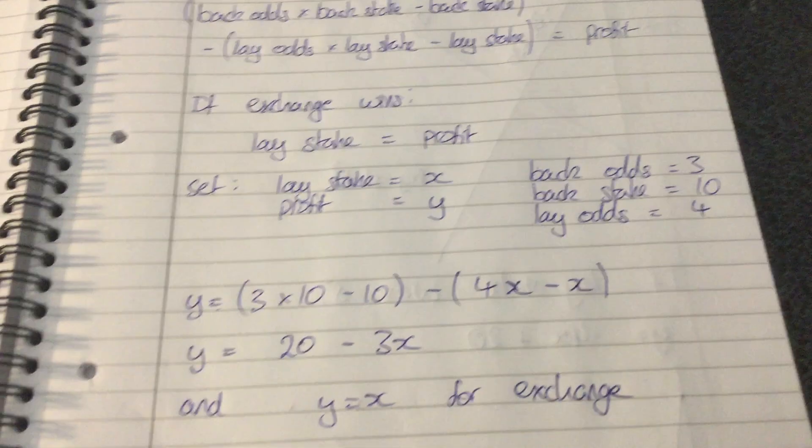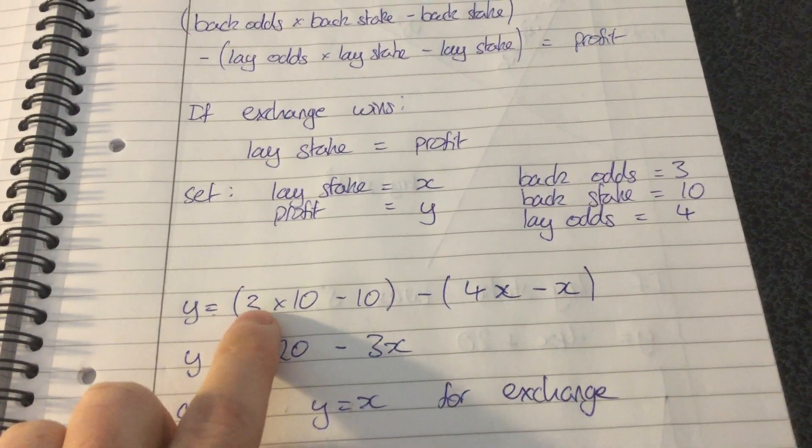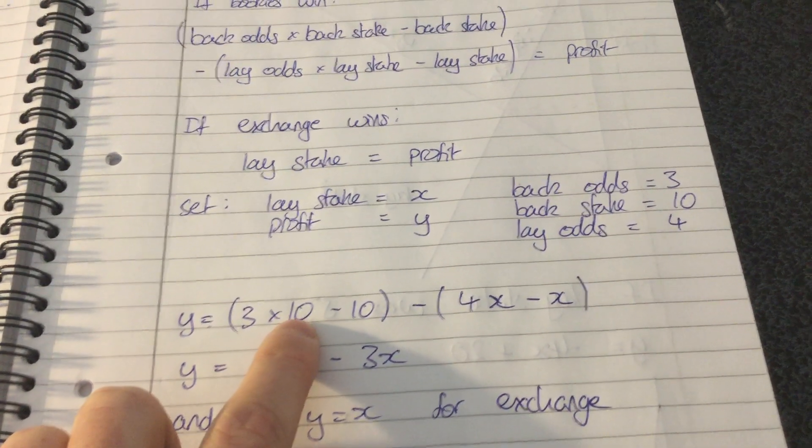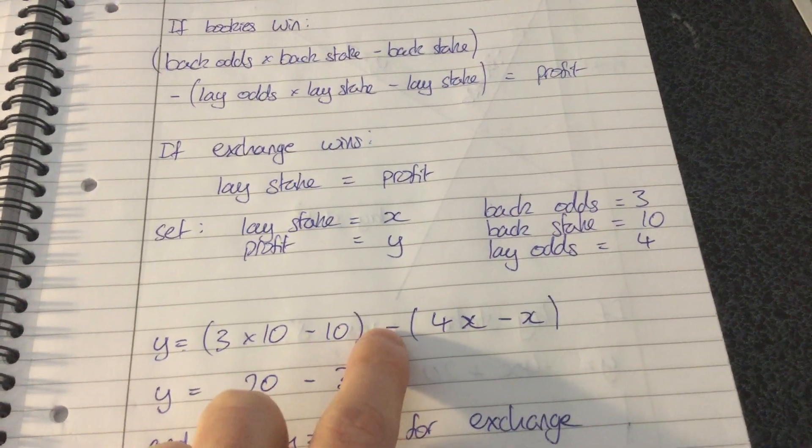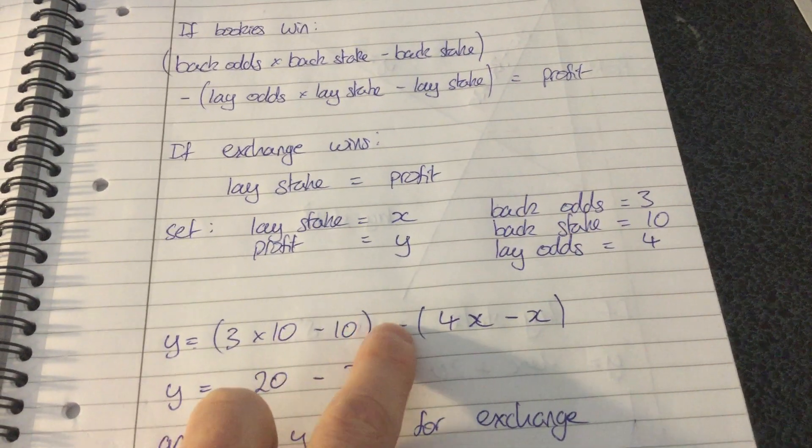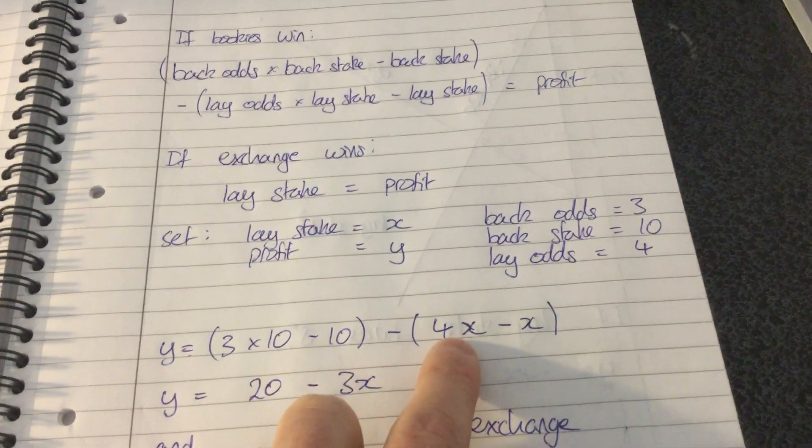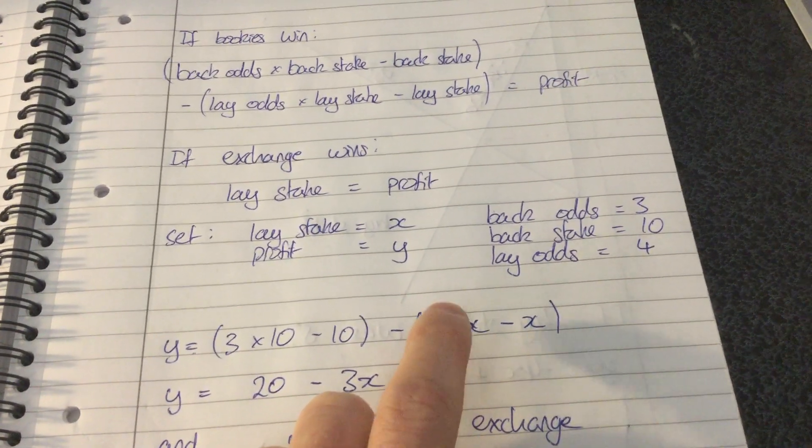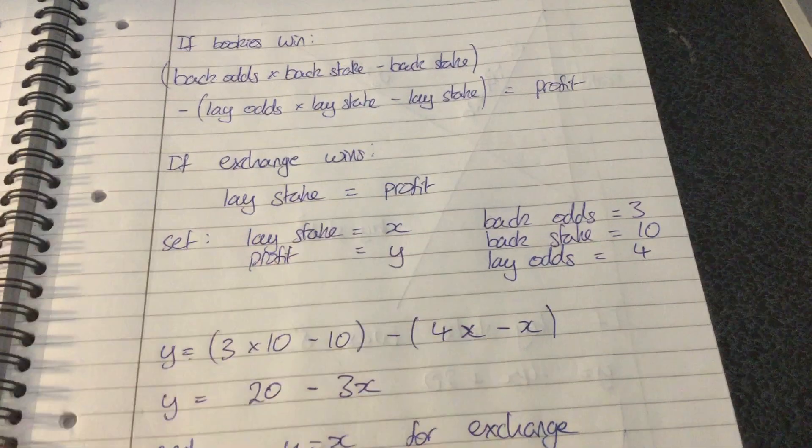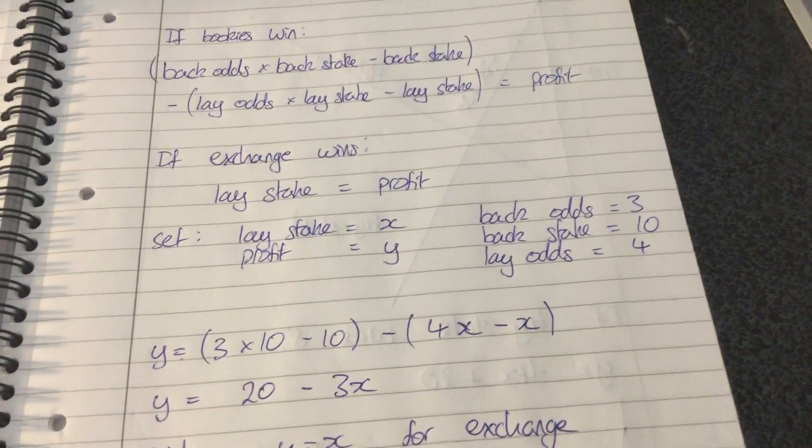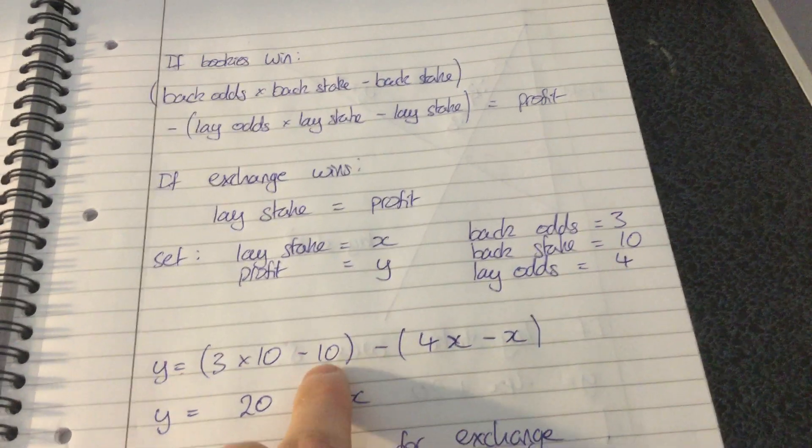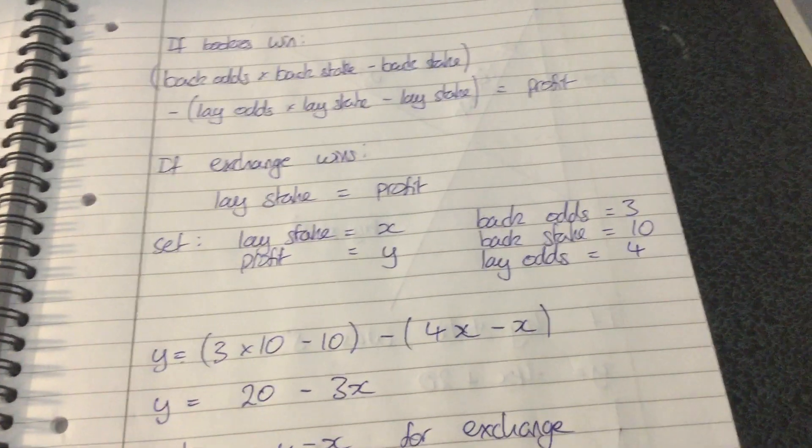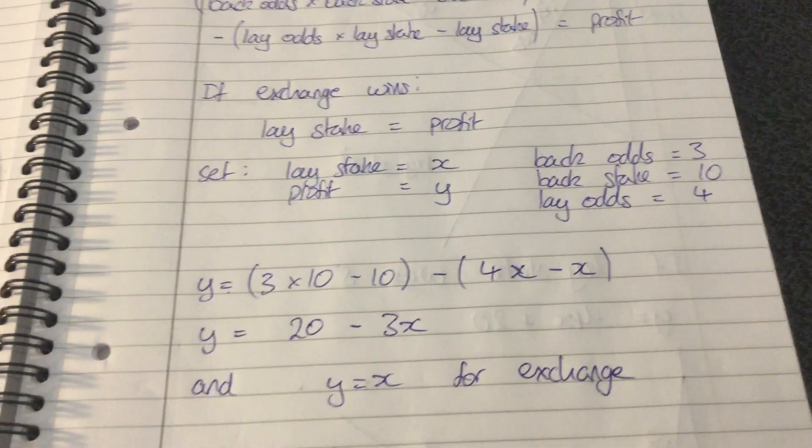Plug in those numbers - y is equal to our profit, it's unknown, that's equal to the back odds multiplied by the back stake minus the back stake. And then we need to, that's our profit from the bookies, then we need to subtract the losses from the exchange. So the exchange odds multiplied by the exchange stake, and then subtract the exchange stake as well for the same reason we subtract this 10 here.